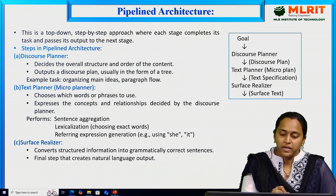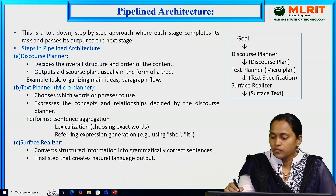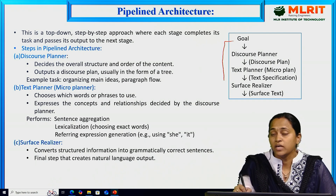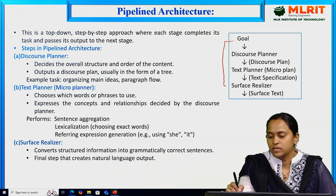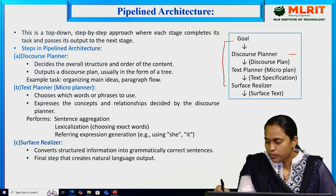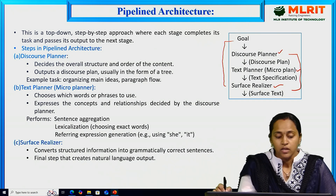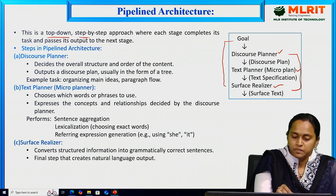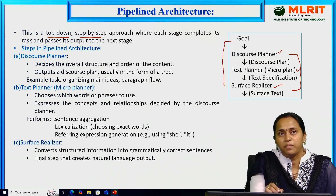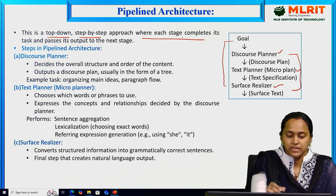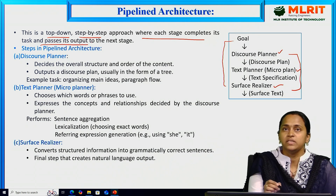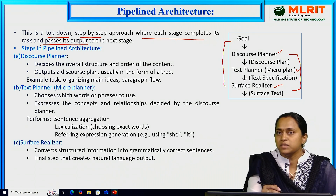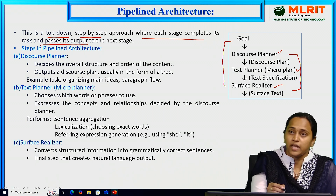Coming to the first one: pipeline architecture. What is the goal of this architecture? We convert structured data into natural language text. To do this, we follow some processors: first, discourse planner; second, text planner; and third, surface realizer. This is a top-down approach — a step-by-step process where each stage completes its task and passes its output to the next stage, ultimately producing natural language output.